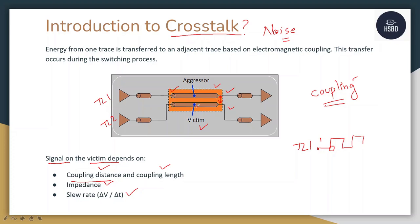Coupling length refers to how far along both transmission lines are getting coupled with each other. The impedance: if there is an impedance difference between the aggressor and the victim, that also causes crosstalk. And slew rate — slew rate is basically delta V by delta T — that tells us about the change in voltage per unit time, and that also causes crosstalk.